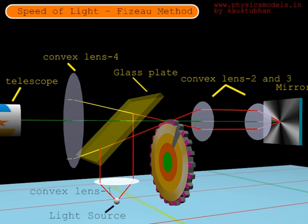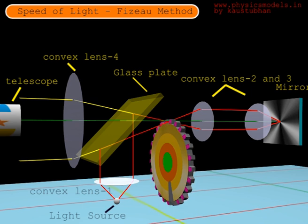The red beam retraces its steps and comes back to the glass plate. This time it passes through the glass plate, strikes lens number 4, and again becomes parallel to the principal axis. On the left hand side, we have a telescope. Sometimes we will see light if it has passed through the gap. Sometimes we will not see light if it is blocked by the teeth of the gear.